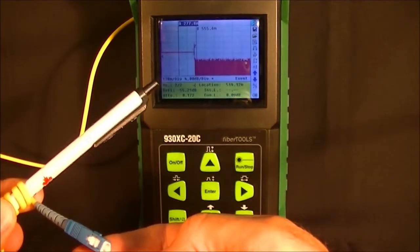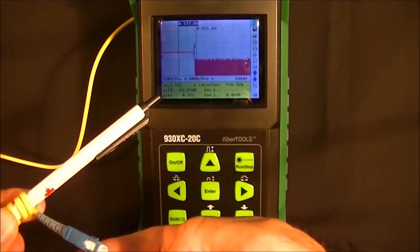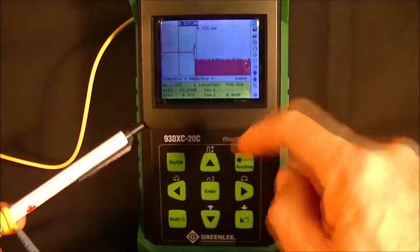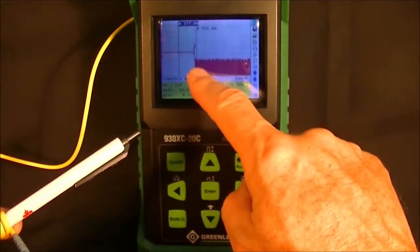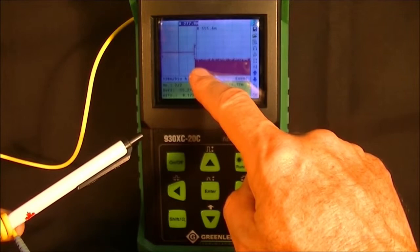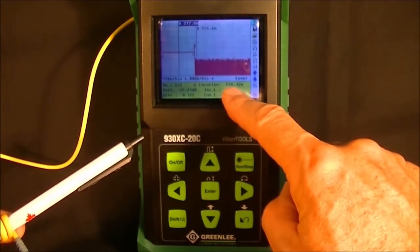This is why we want to have as few reflections and reflective components in a network. You can see again we have the bulkhead at event number one and the end of the fiber which is event number two, and it's measured at 514 meters.